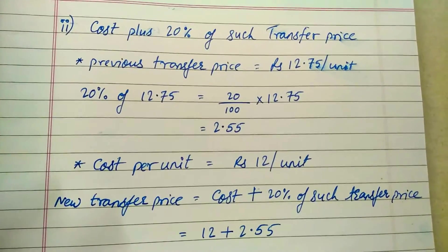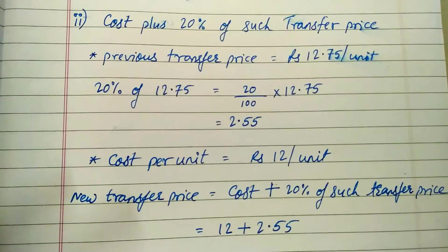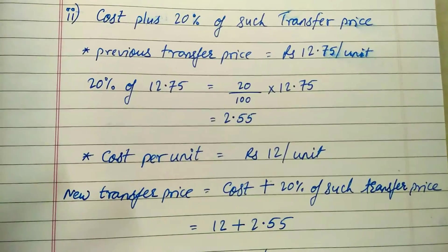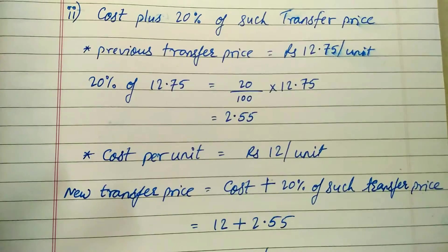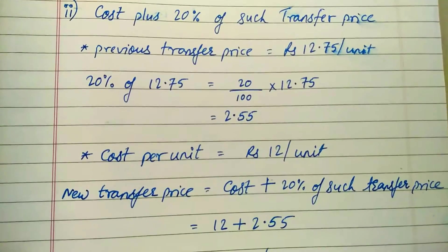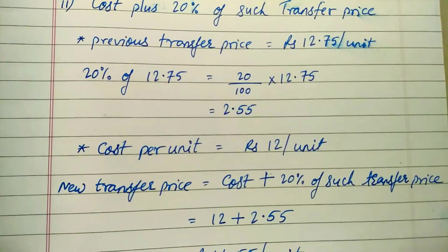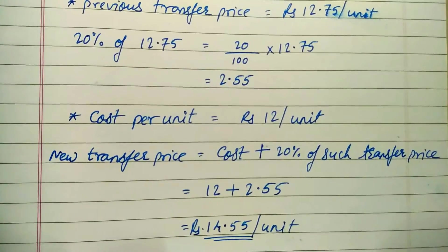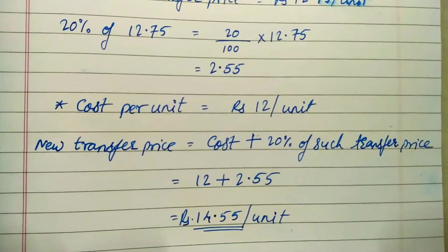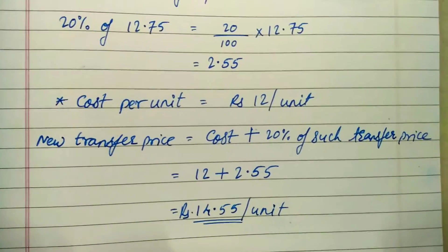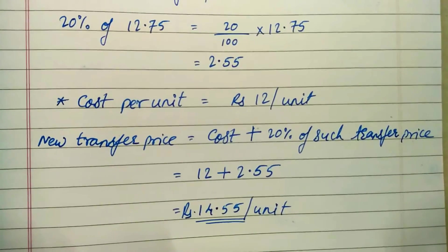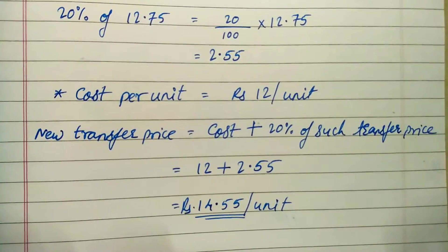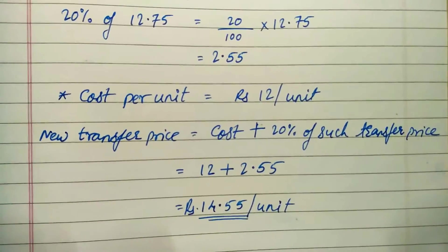The second method says cost plus 20 percent of such transfer price. We need two things: 20 percent of the previous transfer price, and cost per unit. The previous transfer price is 12.75 rupees per unit; 20 percent of 12.75 is 2.55 rupees. Cost per unit is 12 rupees. So the new transfer price is 12 plus 2.55, which equals 14.55 rupees per unit by the second method.